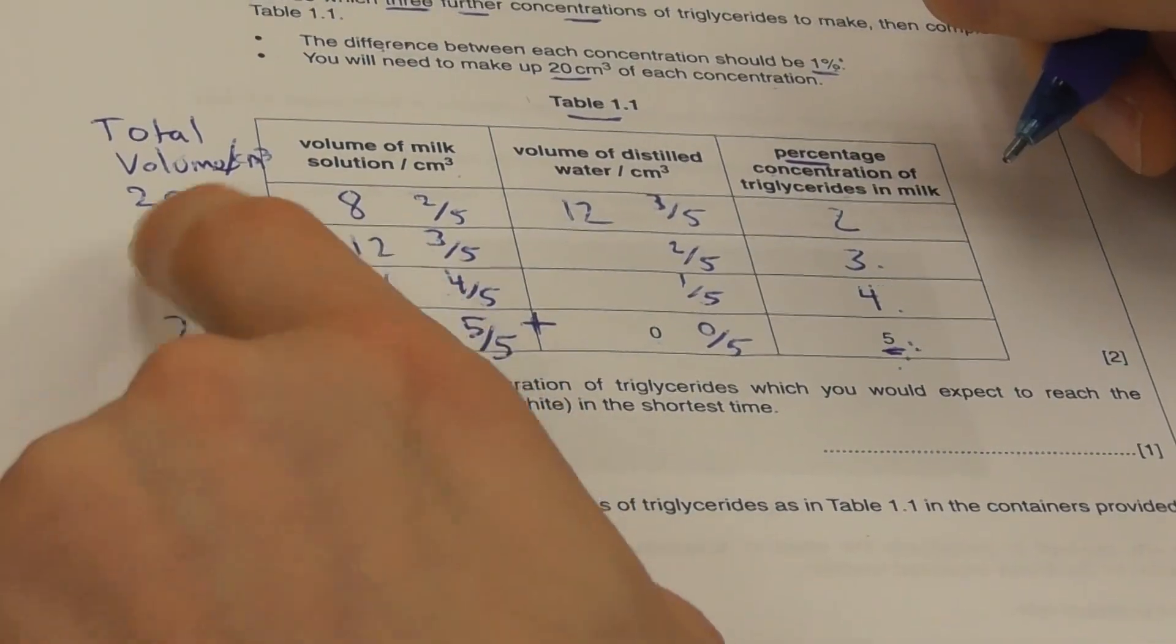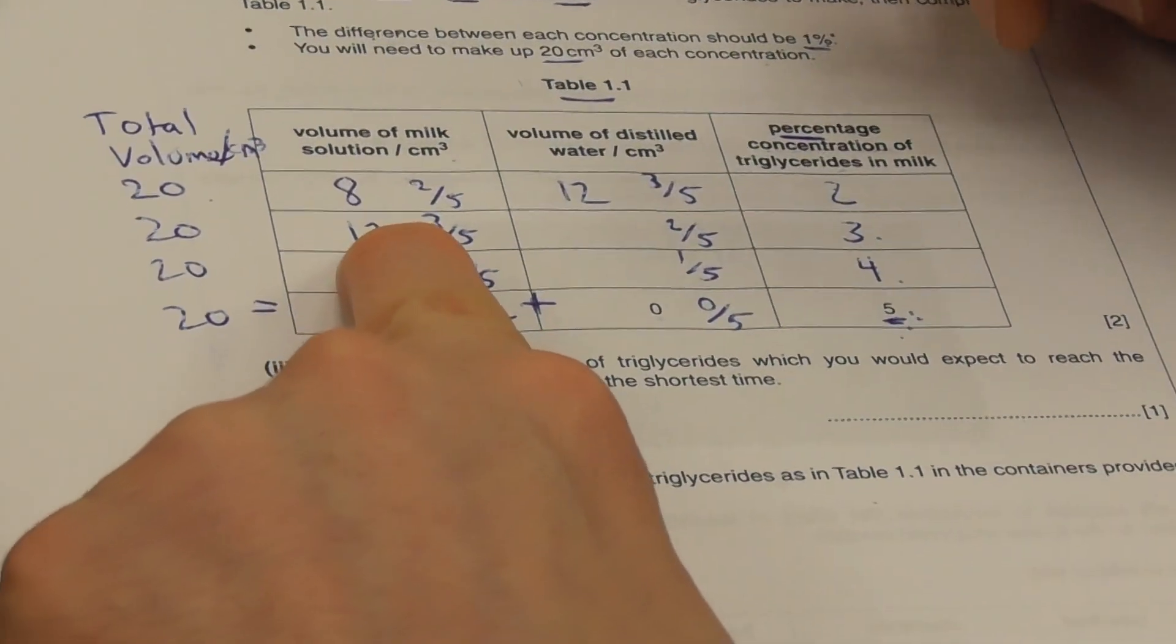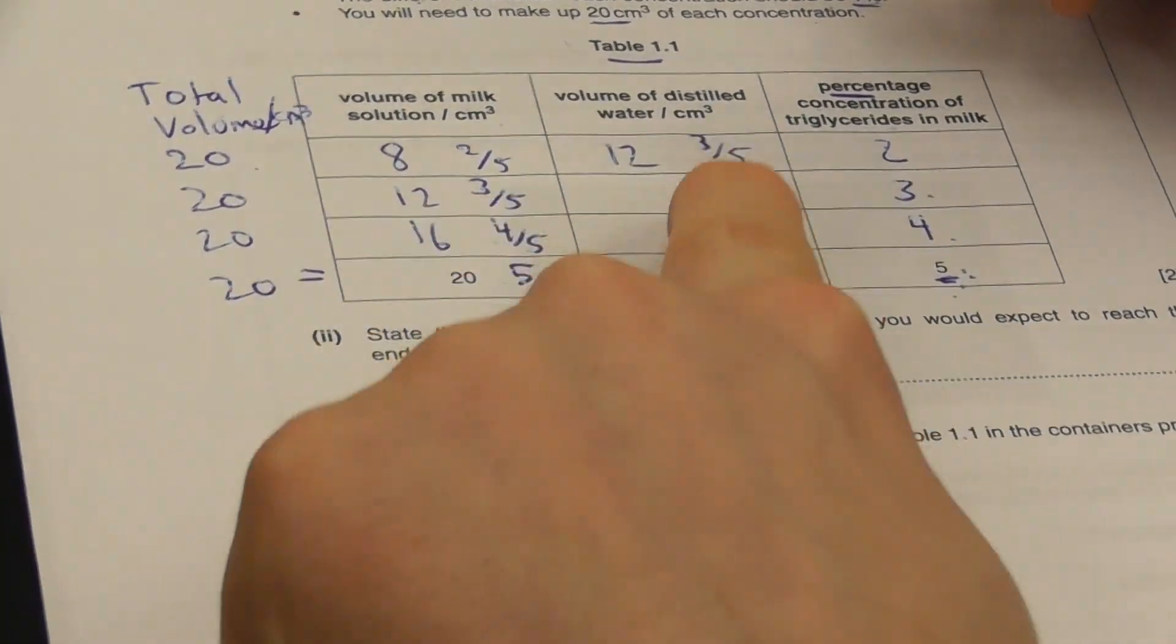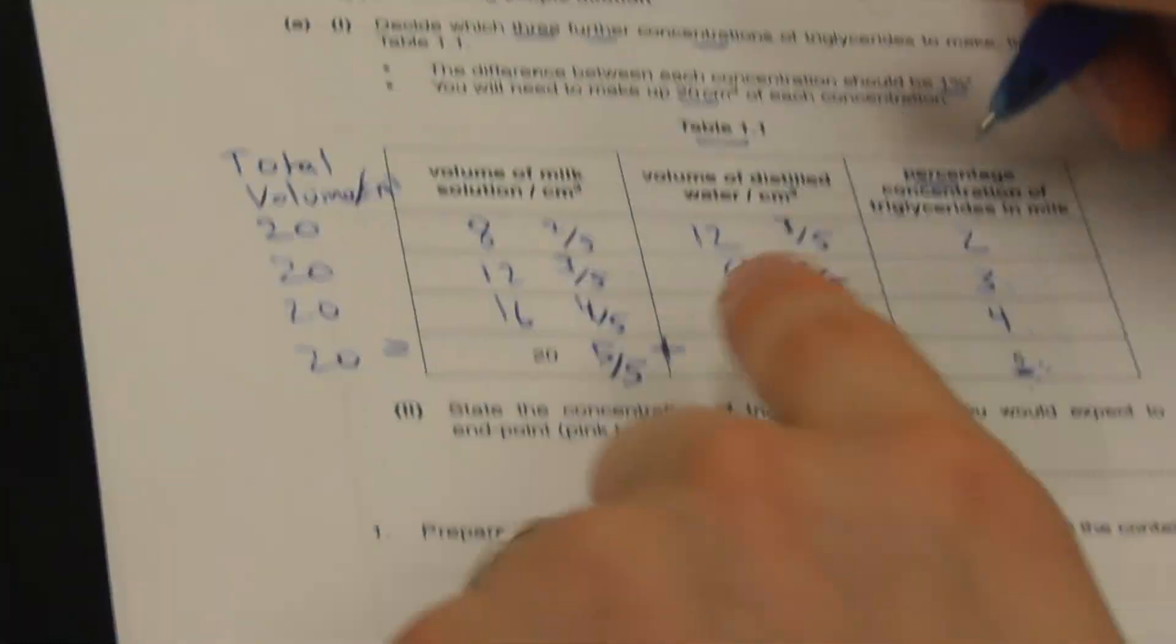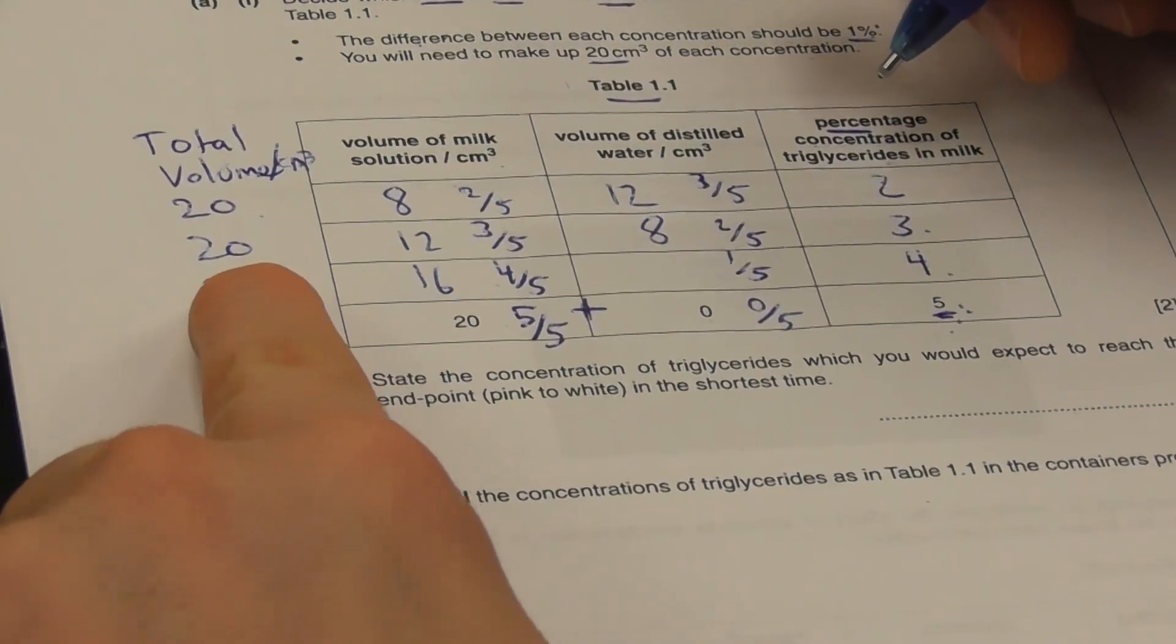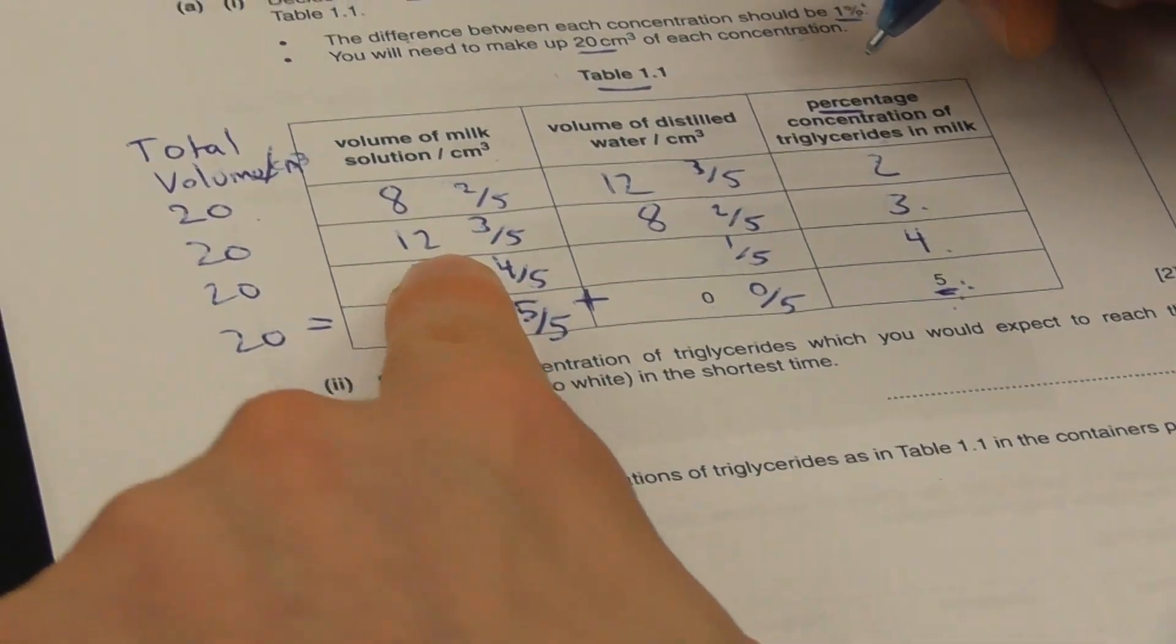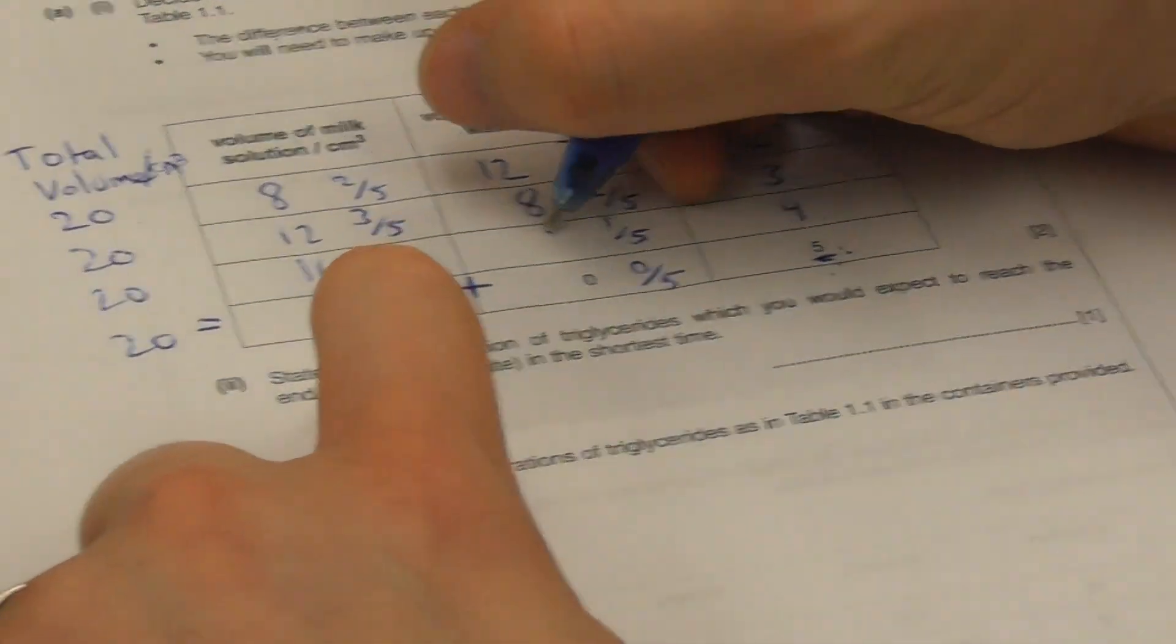Same goes for here. 20 minus 12 is 8. 2 fifths of 20 is 8. 12 plus 8 is 20. 1 fifth of 20 is 4. 20 minus 16 is 4.